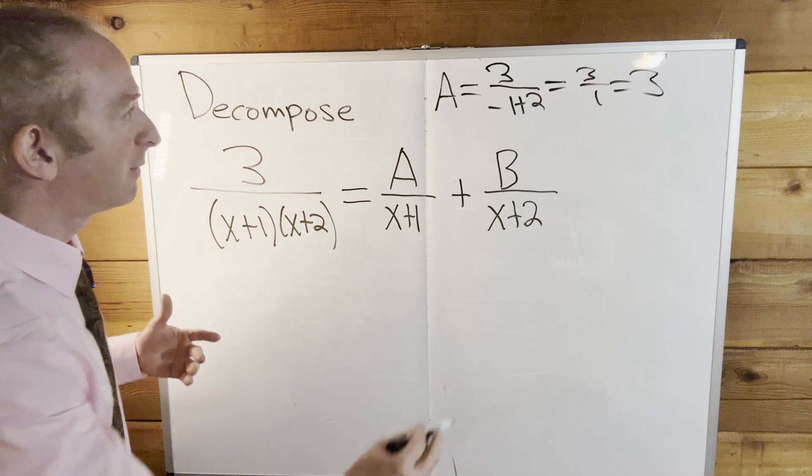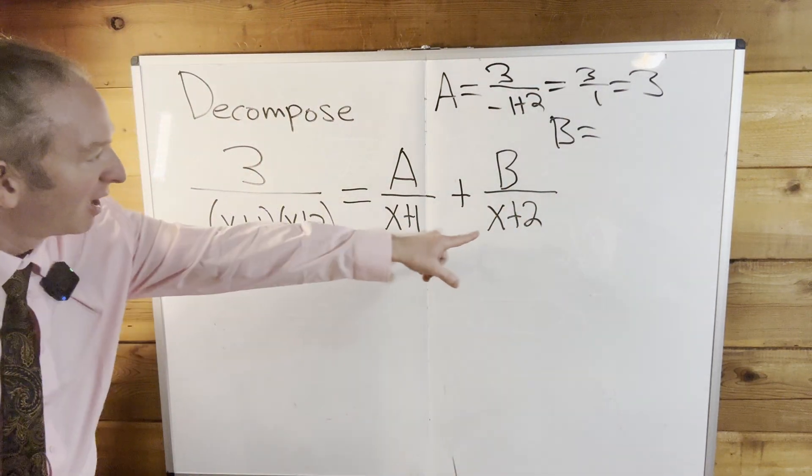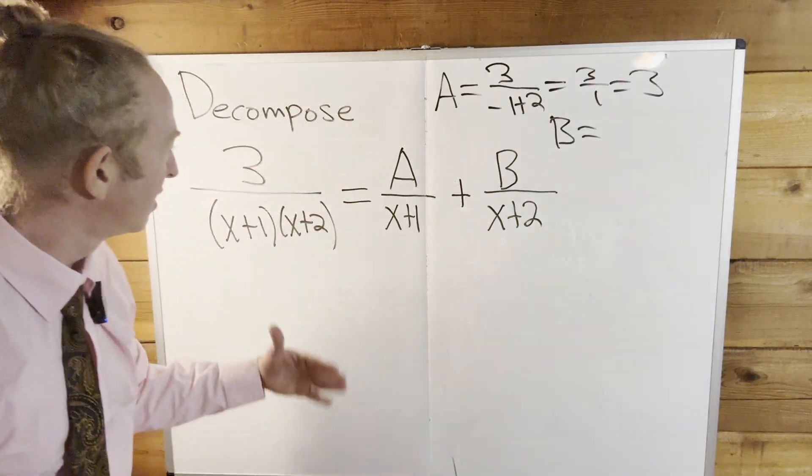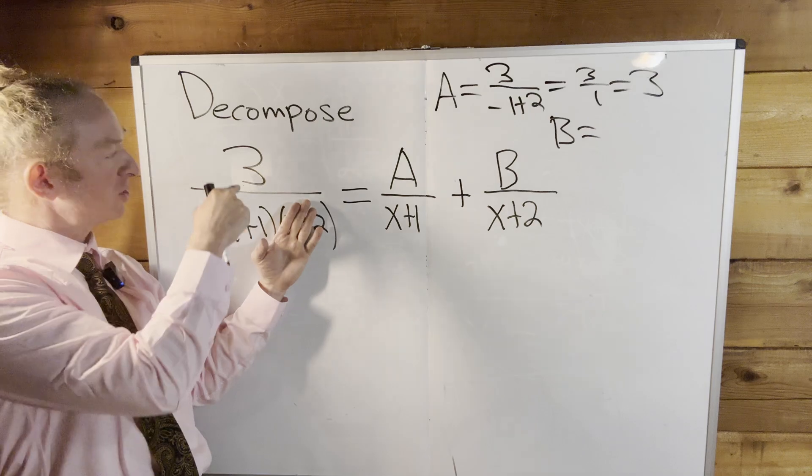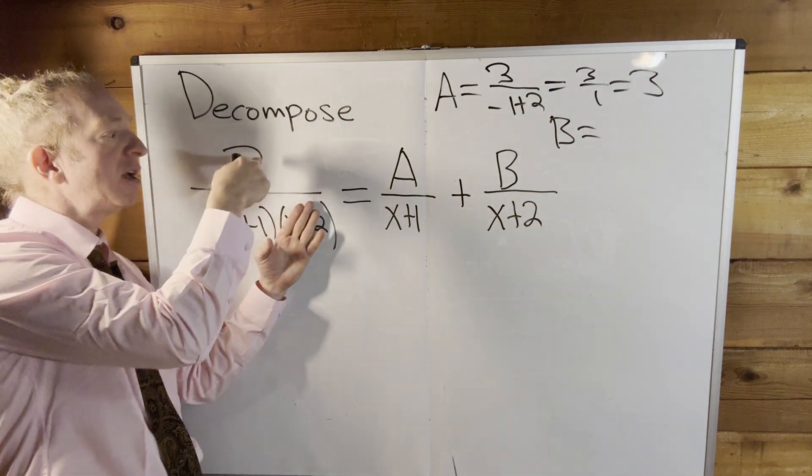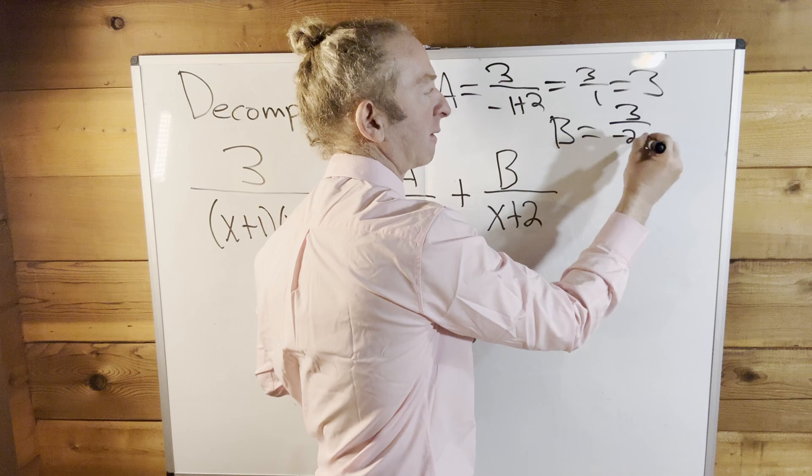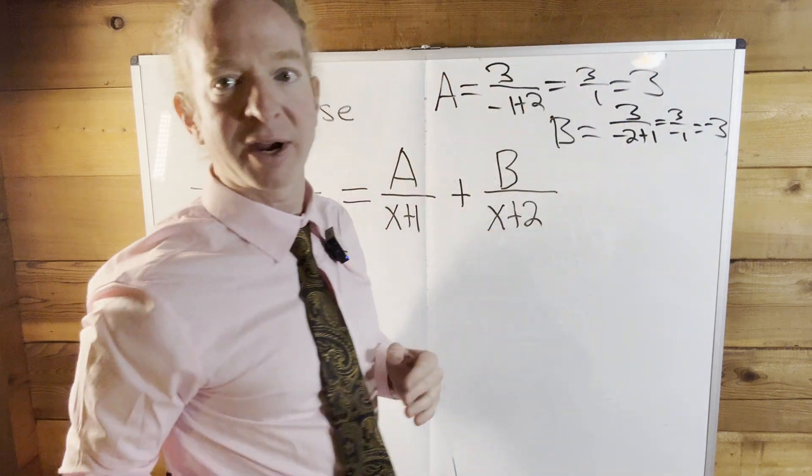Let's find B. Same thing for B. What makes this undefined? Negative 2, right? So you cover it up. And then you plug in negative 2 for the x. So 3 over negative 2 plus 1. That's 3 over negative 1, which is negative 3. Beautiful.